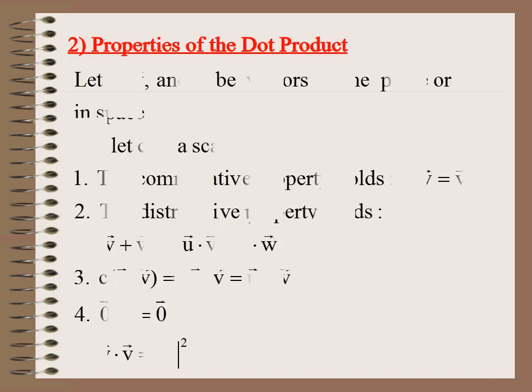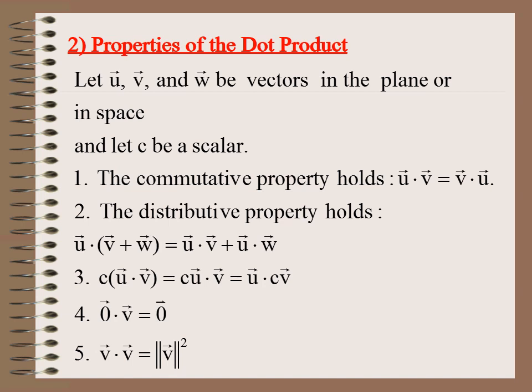Now, properties of the dot product: the dot product is commutative, where u·v = v·u; it is distributive, where u·(v + w) = u·v + u·w; if multiplied by a constant, the constant can be applied to either component; zero times any vector is zero; and v·v equals the norm of v squared.